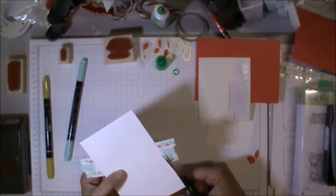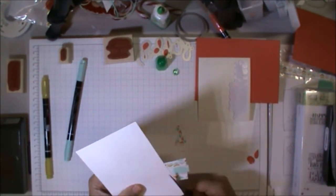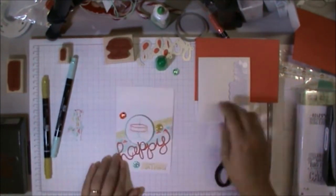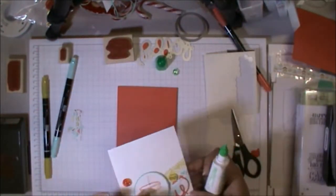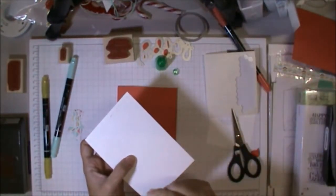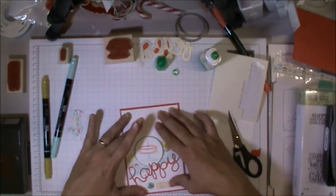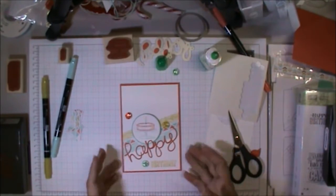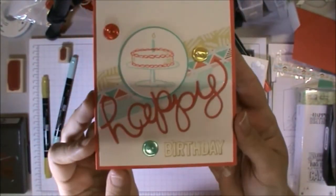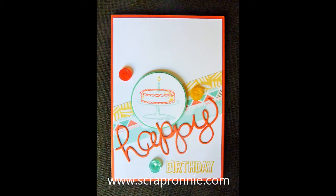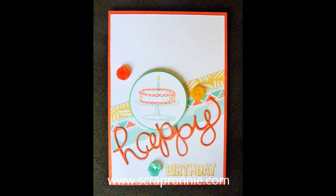I just trimmed off the excess there and put this onto a Calypso Coral card base. That's it—as simple as that! Really super duper cute little card, and I can't wait to use some more of these products in some upcoming projects.